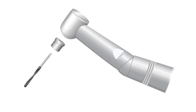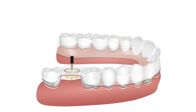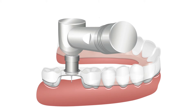The first step is to place the custom drill stops onto your drills. Then place the guide with the bleeding point insert and use an endo file to create the bleeding point. Remove the insert and place the guide. Insert the spear drill through the guide, engaging the guide hole. Insert the tip of the drill into the bleeding point and drill to depth.